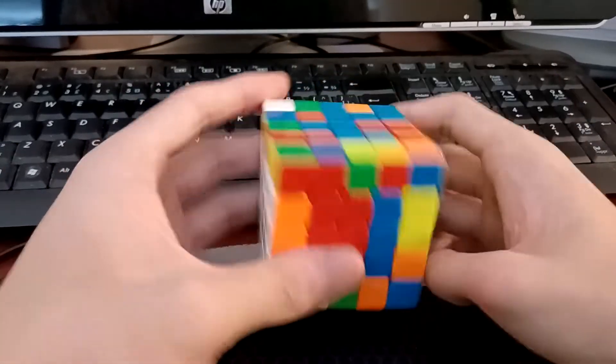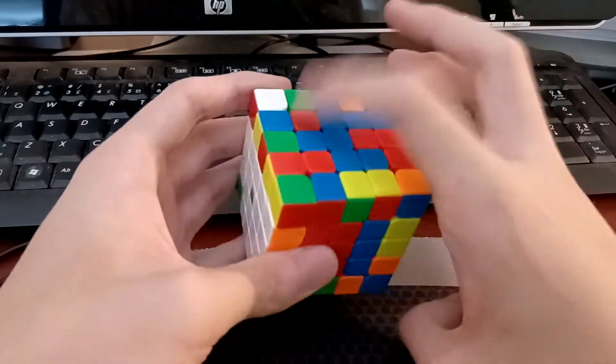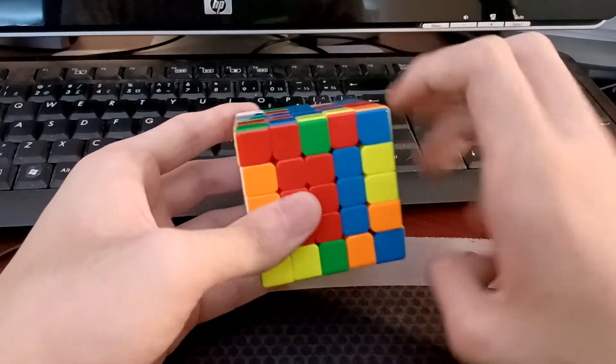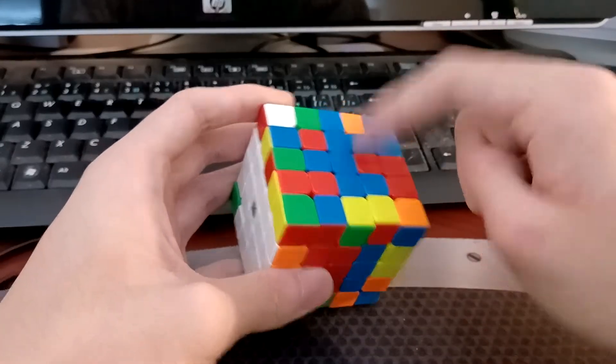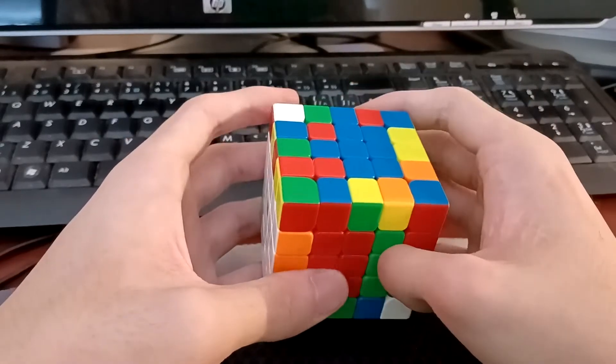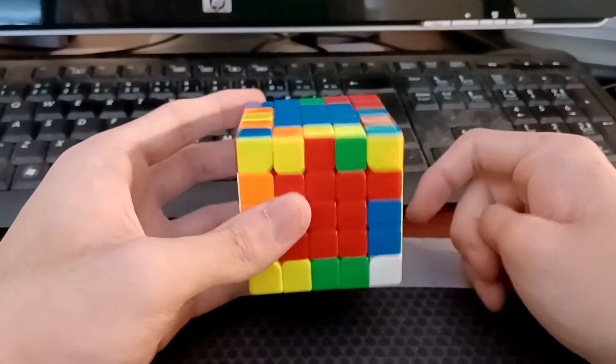But the cancellation way goes like this. So pretend like you're inserting these two corners into here. But doing that also pushes this to the back. So what you can do is commutator and solve that.